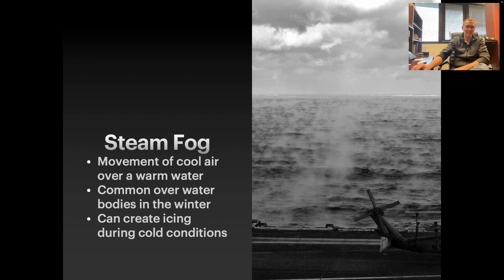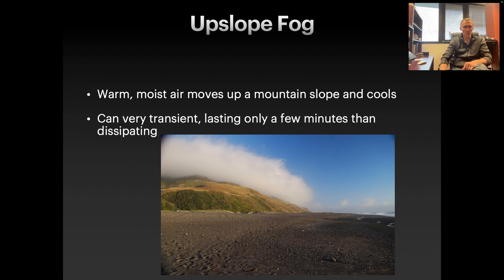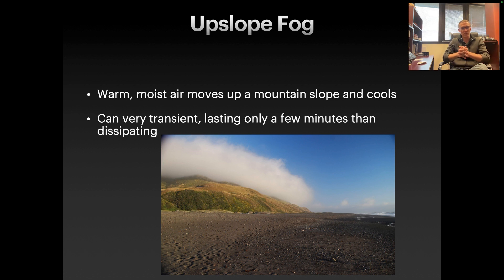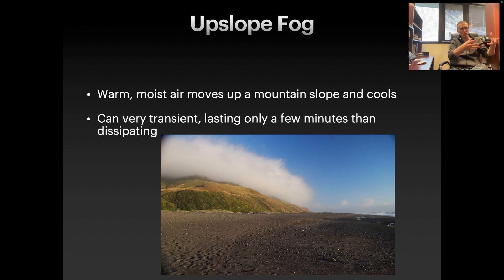You can get icing during cold conditions with any of these types of fog. Upslope fog is when warm, moist air moves up a mountain slope. In mountainous areas, you might have a wind which moves a warm air mass upslope, and that cools down the air. These can actually be very transient — weather in mountainous areas can change a lot, with a lot of turbulence. Upslope fog might last for only a few minutes, but it's this warm air mass that gets pushed upslope by wind, cools down, and condenses out water into tiny droplets that form the fog.